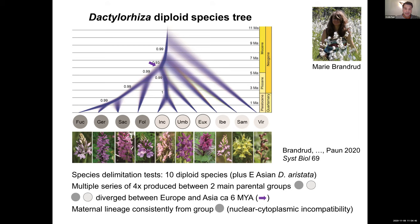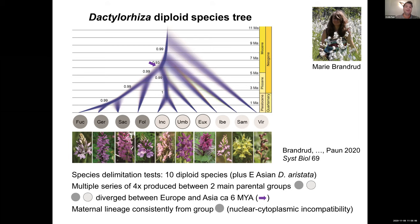After divergence, Viridis and Umbrosa remain just Asian, whereas Incarnata returned to Europe roughly 1.5 to 2 million years ago. Incarnata is the paternal lineage of most polyploids in the genus. The maternal lineage is always from the dark gray clade, most likely due to a nuclear-cytoplasmic incompatibility, which is a consistent process in this genus.